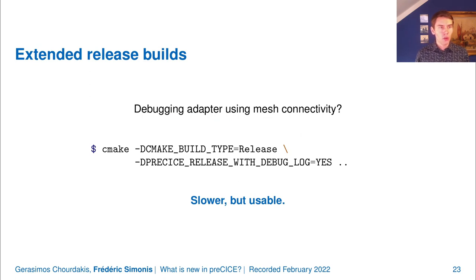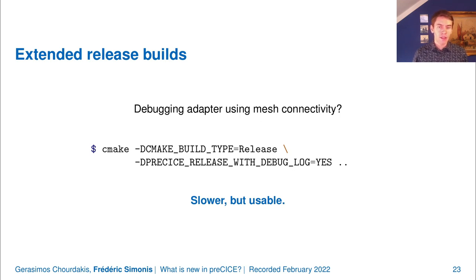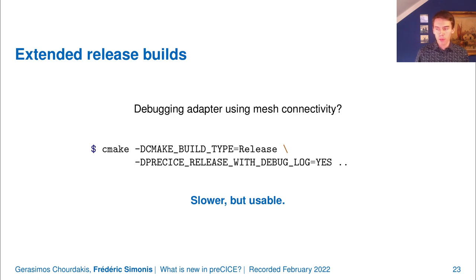Finally, we now have extended release builds. You will be able to specify that even in a release build you would still like assertions, debug logging, or trace logging available. This is especially interesting for adapter developers who need mesh connectivity, where debug builds are often prohibitively slow. Using this, you get a release build that's slower than a normal release but gives you, for example, the debug log. That concludes my section of the talk — I'm handing over to Gerasimus.